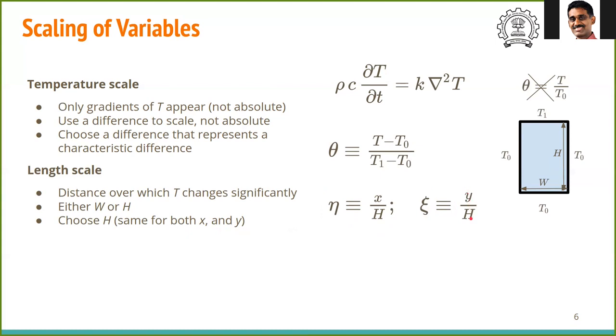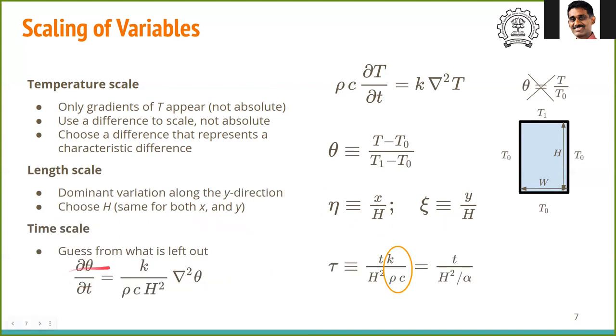Finally, for the time scale, since there is no imposed time scale, we have to identify the scale from what is left out in the equations. Substituting for the dimensional variables for temperature and length, we get ∂θ/∂t on the left hand side and Laplacian of θ on the right hand side. Note that the Laplacian here is dimensionless.